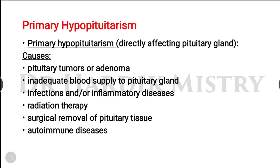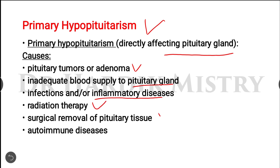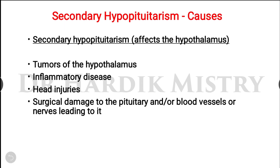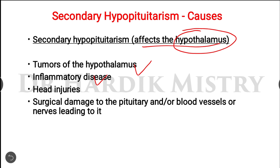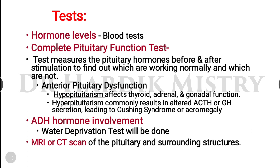Hypopituitarism may be primary or secondary. Primary hypopituitarism directly affects the pituitary gland and is caused by pituitary tumors or adenoma, inadequate blood supply, infections, inflammatory disease, radiation therapy, surgical removal of pituitary tissue, or autoimmune disease. Secondary hypopituitarism affects the hypothalamus and is caused by hypothalamic tumors, inflammatory disease, or head injury.